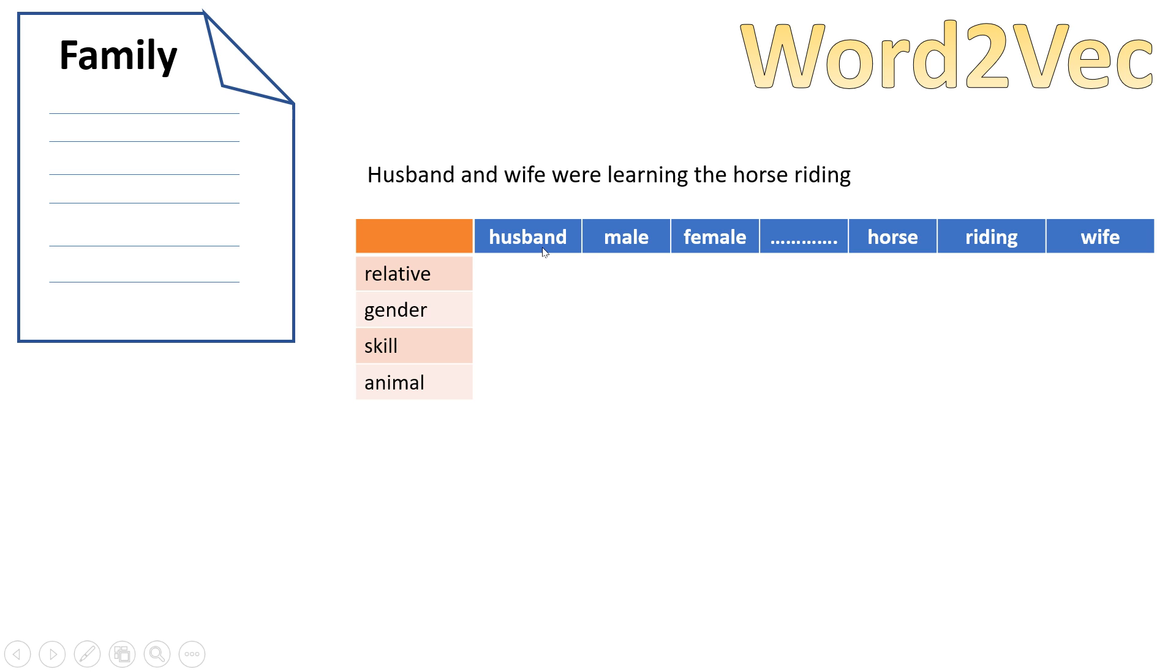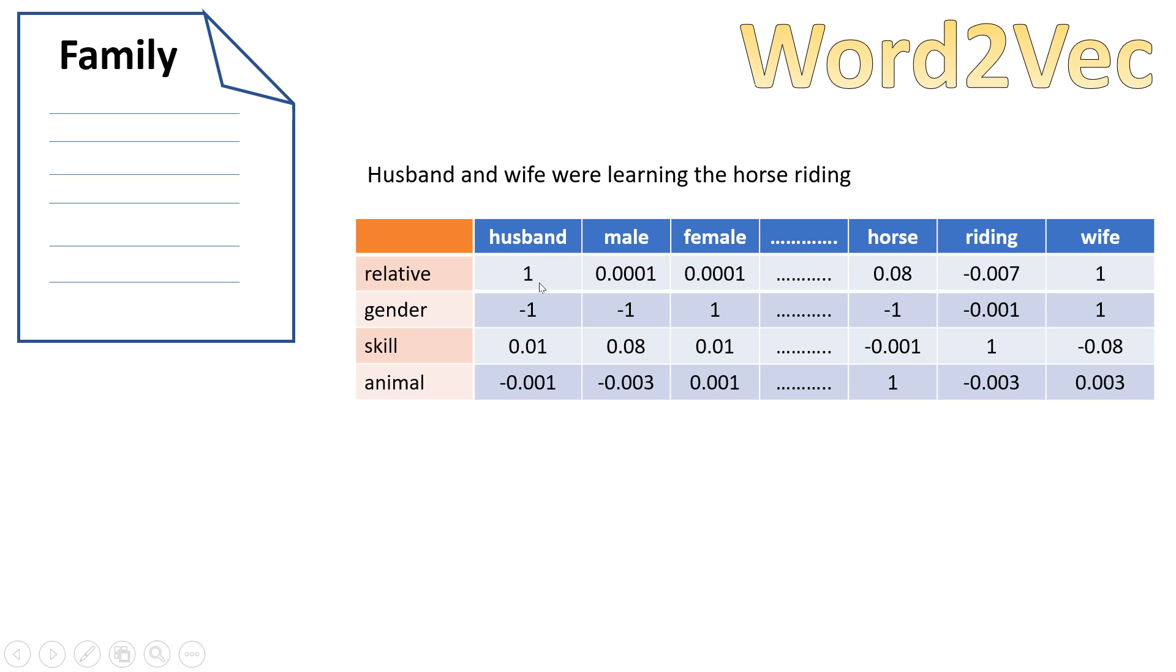So wherever it matches to the word, it will produce some sort of scoring. And it also, like I said, works on CBOW, which is nothing but continuous bag of words. Continuous bag of words takes multiple inputs and predicts one output, and Skip Gram works in the other way. So let's come back to the point.